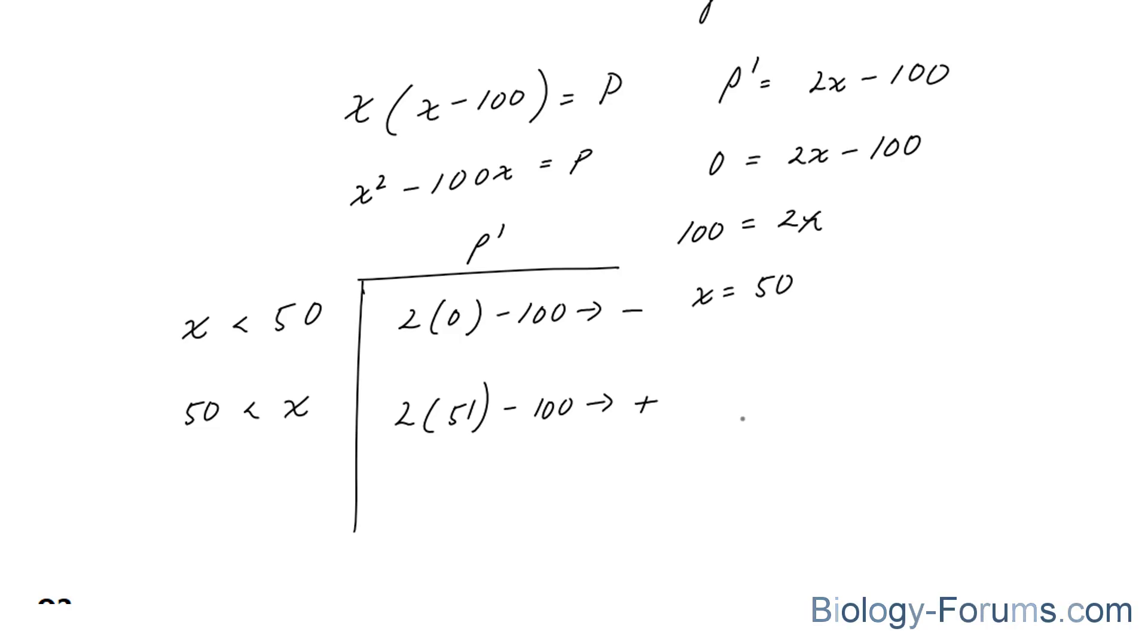So the way we interpret this is that as x was approaching x equals 50, it was decreasing. And as soon as it hit 50, and even after 50, it began to increase.